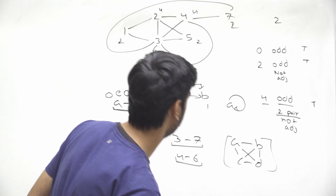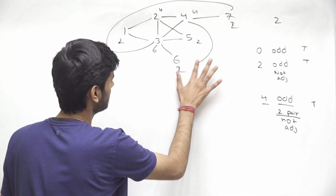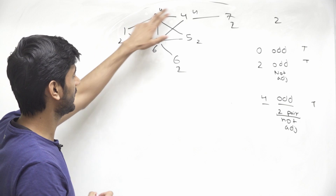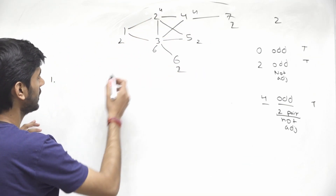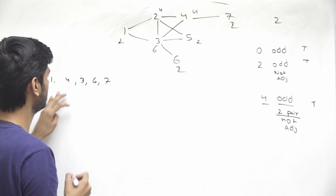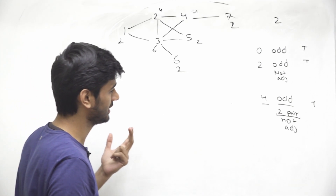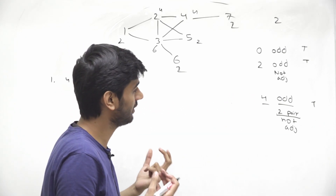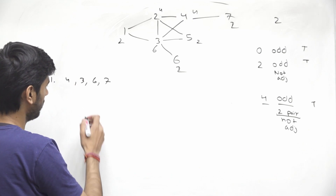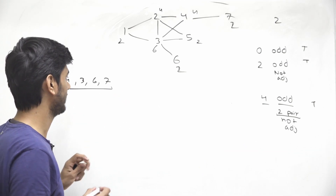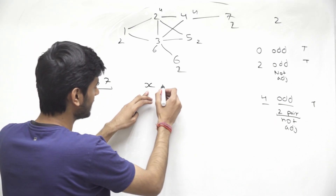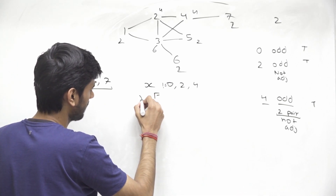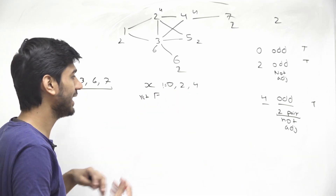So here is the approach. First, find how many nodes have odd degree — call this x. If x is not equal to 0, 2, or 4, the answer is false. If x equals 0, the answer is always true. If x is 2 or 4, we need to check for non-adjacent pairs.